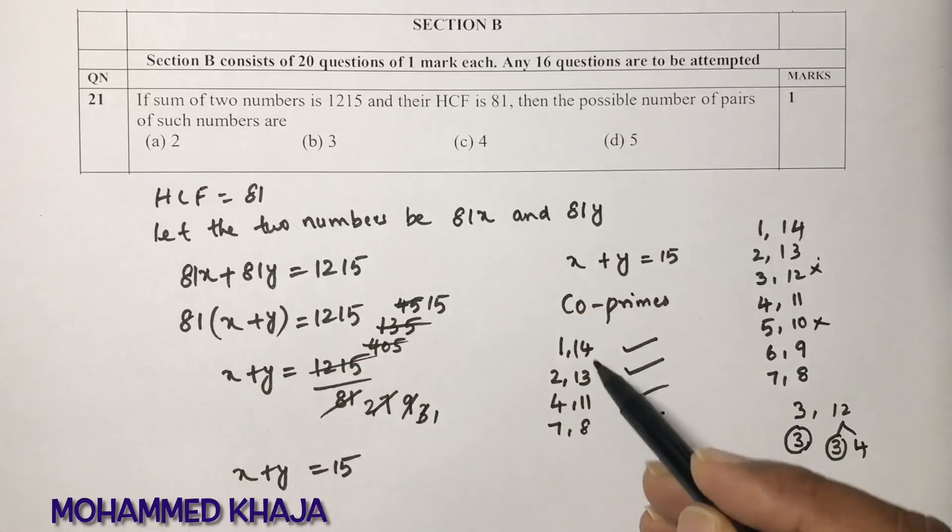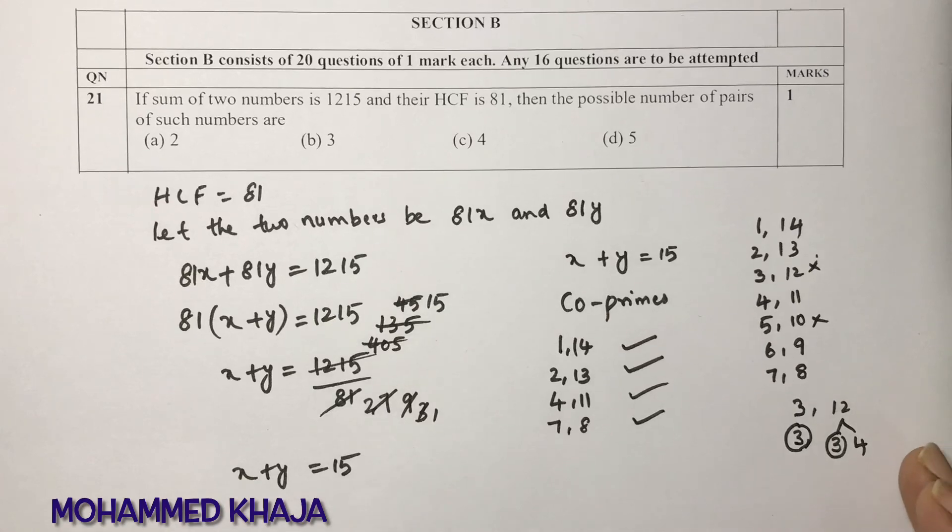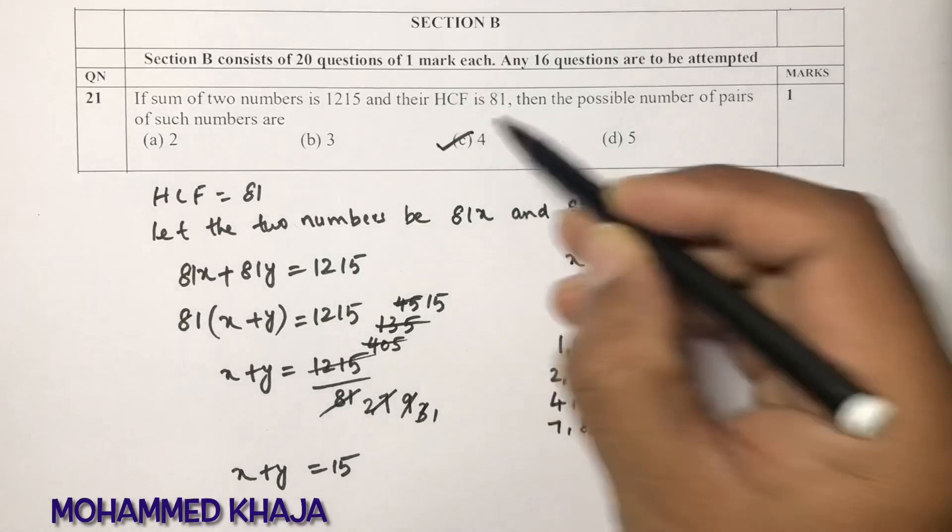So in this way, how many possible number of pairs are there? There are 4 possible pairs, so the correct option is C.